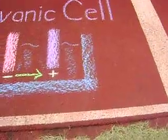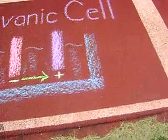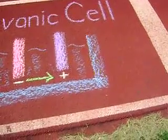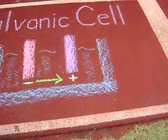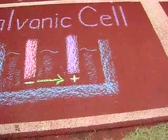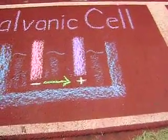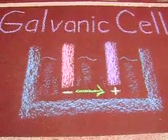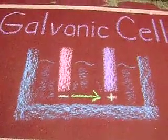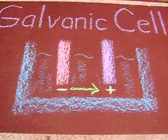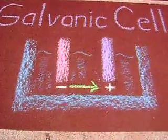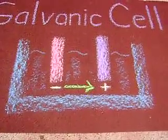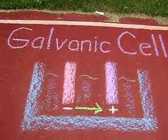In a galvanic cell, the oxidation and reduction half-reactions take place in different regions of the cell and are commonly called electrode reactions. Oxidation takes place at the electrode called the anode, and reduction takes place at the other electrode called the cathode. The overall chemical reaction sets up a flow of electrons through an external wire joining the two electrodes. And that is a galvanic cell.